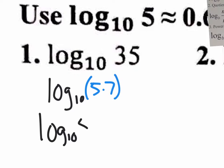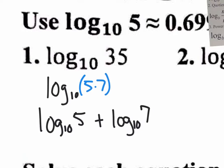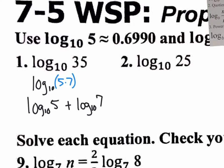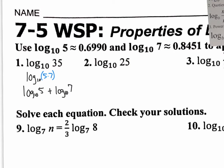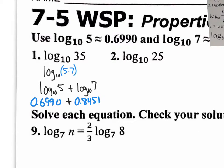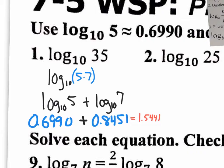Using the product property, log base 10 of (5 × 7) expands to log base 10 of 5 plus log base 10 of 7. Since those decimal values are given, we substitute: 0.6990 plus 0.8451, which gives 1.5441. That's the answer. The purpose is just to practice memorizing and applying the properties, even though a calculator could do it directly.